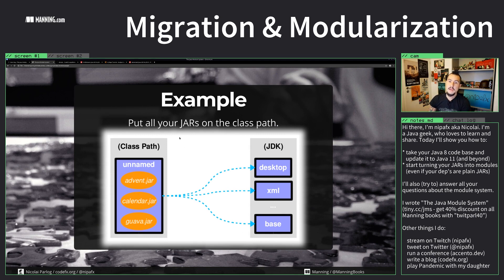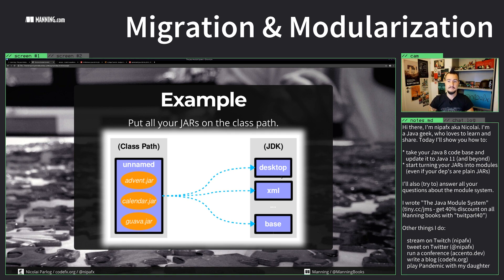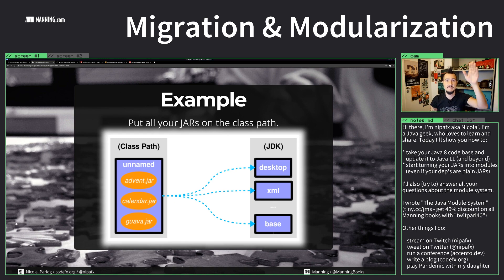Let's go back to the Advent project. We put all the jars — our jars, that's Advent and Calendar, and all dependencies like Guava (the orange bubbles) — onto the class path. The module system draws a big box around it and calls it the unnamed module. The unnamed module can implicitly read all the other modules — that's what the dotted lines represent — including all the JDK modules. This is what we did with the monitor application: all our jars now run in the unnamed module.